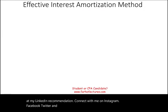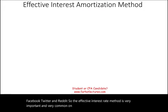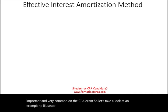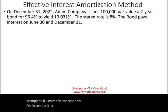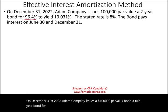The effective interest rate method is very important and very common on the CPA exam. Let's take a look at an example to illustrate this concept. On December 31st, 2022, Adam Company issues a $100,000 par value bond — a two-year bond — for 96.4, to yield 10.031%.